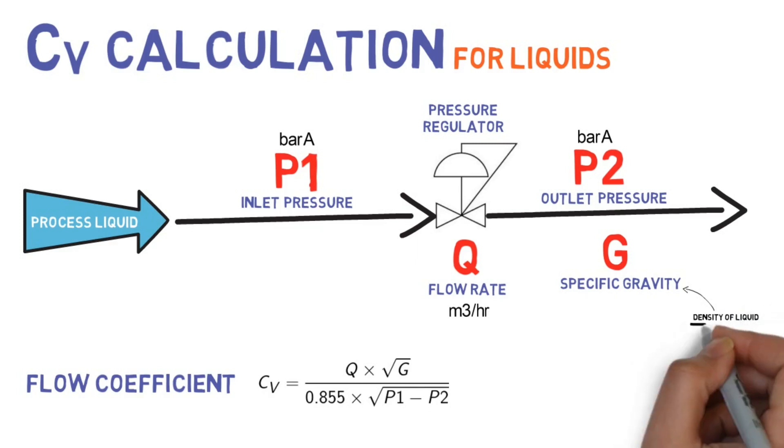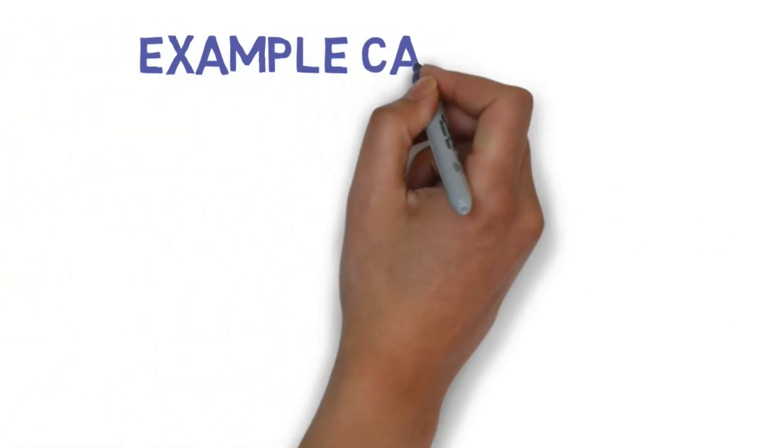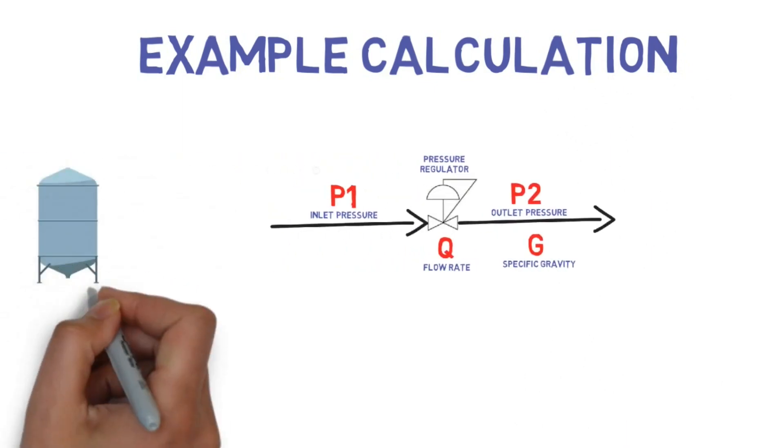Specific gravity is the ratio between density of liquid and density of water. Let's see an example calculation for liquids. Consider water.